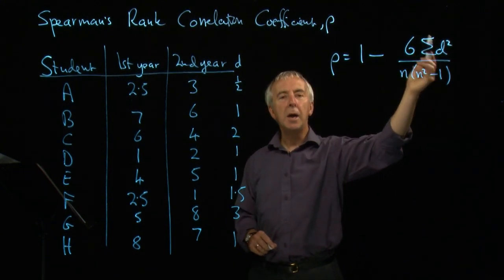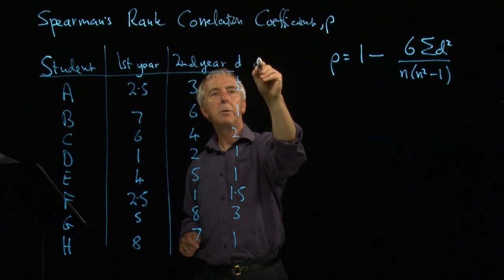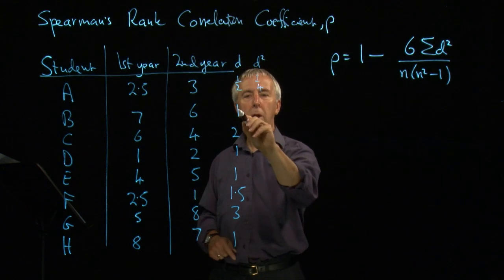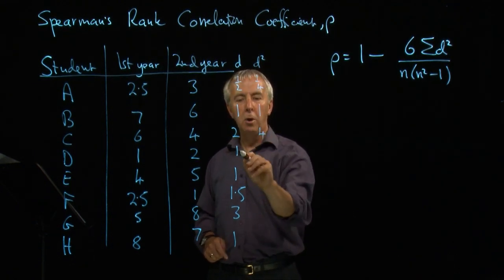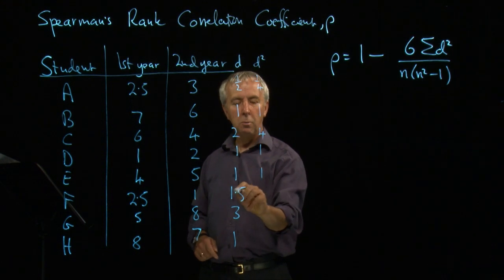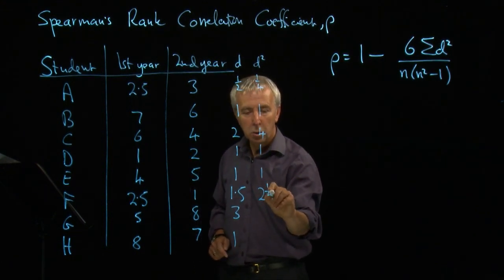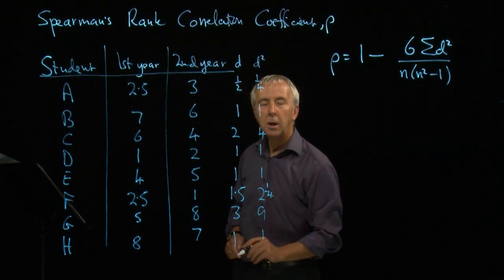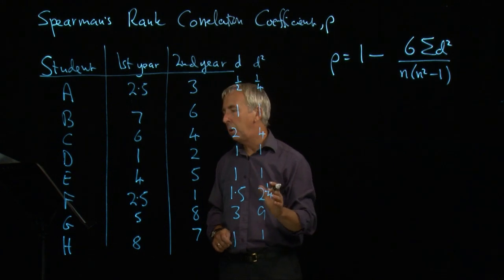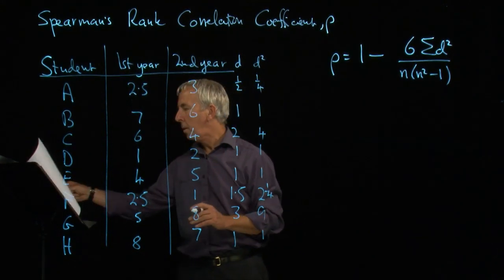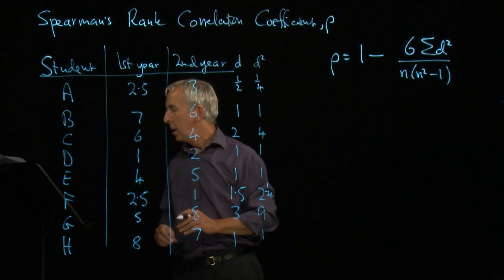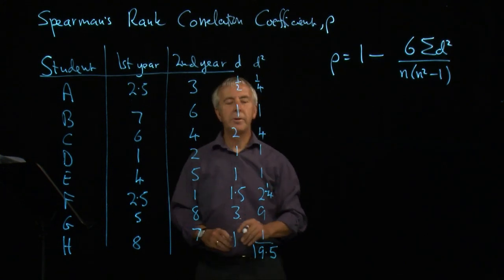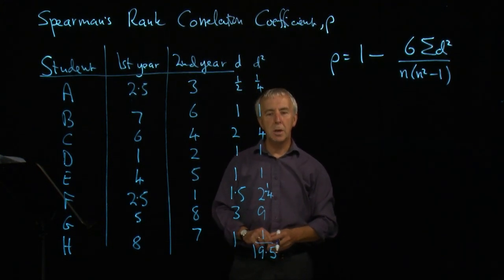Sigma means we want to add up all the d squareds. So if we now do d squared, we get a quarter. Half times a half is a quarter. One squared is one. Two squared is four. One squared, one squared. One and a half times one and a half is two and a quarter. Three squared is nine. And one squared is one. And we have to add those up. We want the total of that column, which comes to quickly 19.5. So the sum of all the d squareds is 19 and a half.